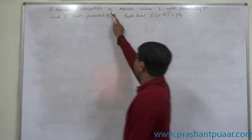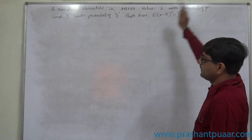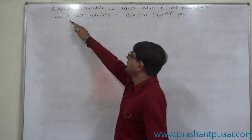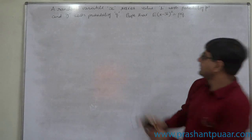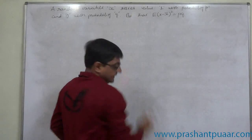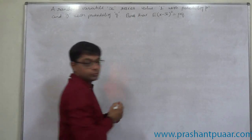A random variable X takes value 1 with probability P and value 0 with probability Q. Prove that E of X minus X bar whole square equals to P into Q.